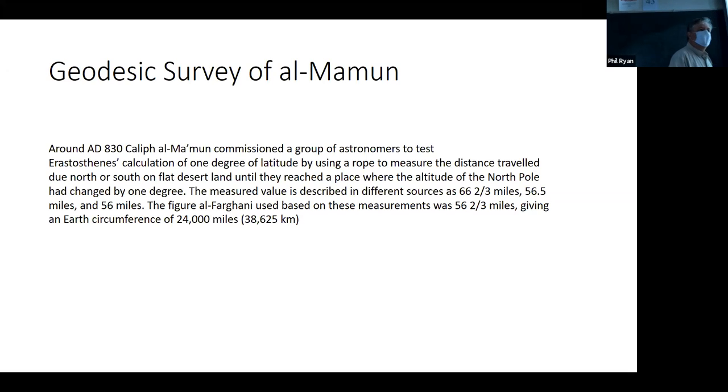And so what he did was he sent guys out into the desert and used a rope and they were supposed to just go, pull the rope out until they went one degree of latitude that they were supposed to go directly north or south. Because the thing is, it's very easy to actually measure latitude.